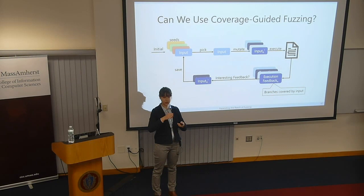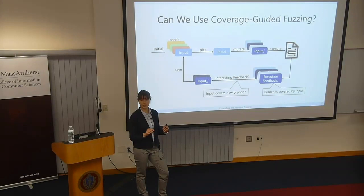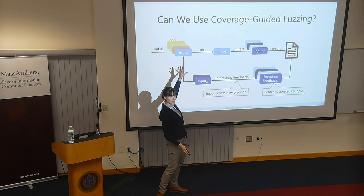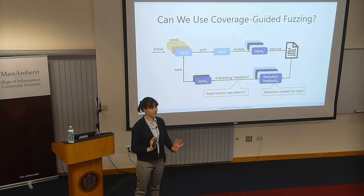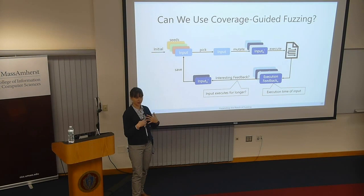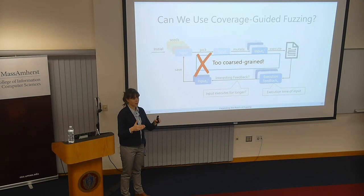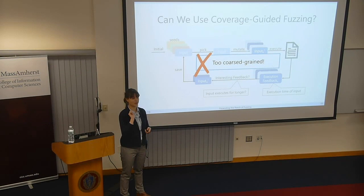So the goal of our PerfFuzz work was to automatically generate these pathological inputs using coverage-guided fuzzing. Why did we think that would work? In regular coverage-guided fuzzing you instrument your program to get which branches are covered — for each if statement, did it take the true or false branch? And you say an input is interesting if it covered a new branch. We could probably adapt this to performance by measuring execution time and saving inputs that execute for longer.